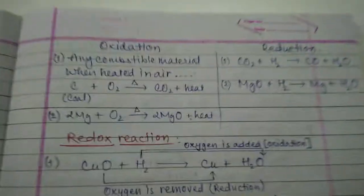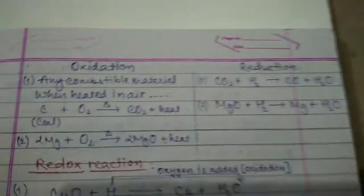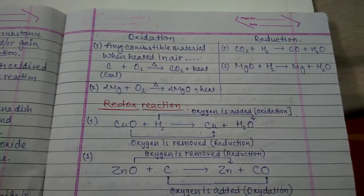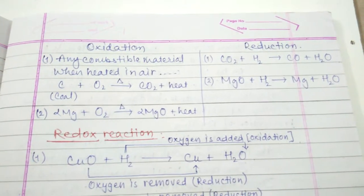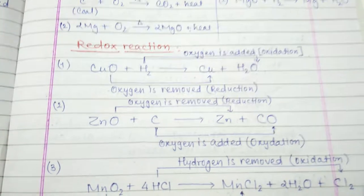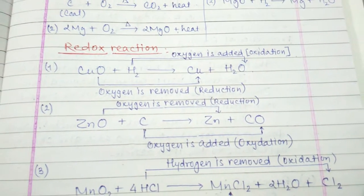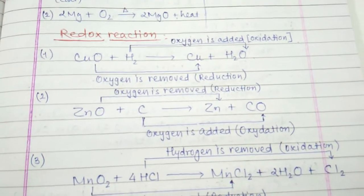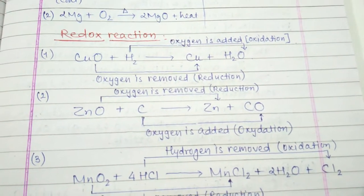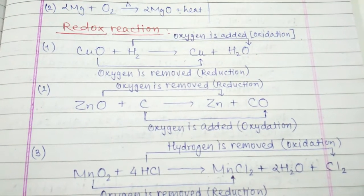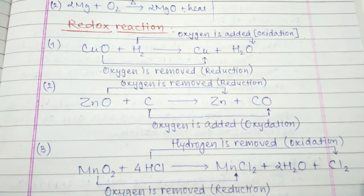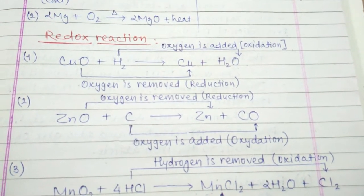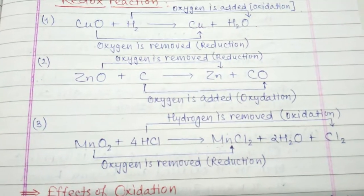In a redox reaction, both oxidation and reduction take place in the same reaction. For example: CuO + H2 → Cu + H2O (steam). Here, oxygen is removed from copper oxide — that is reduction. And hydrogen gains oxygen to form water — that is oxidation. Two other examples of redox reactions are also provided.